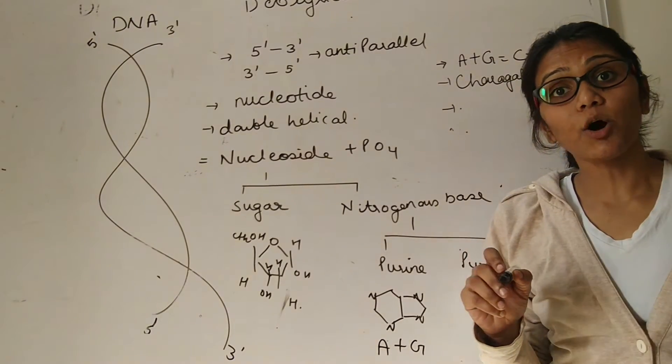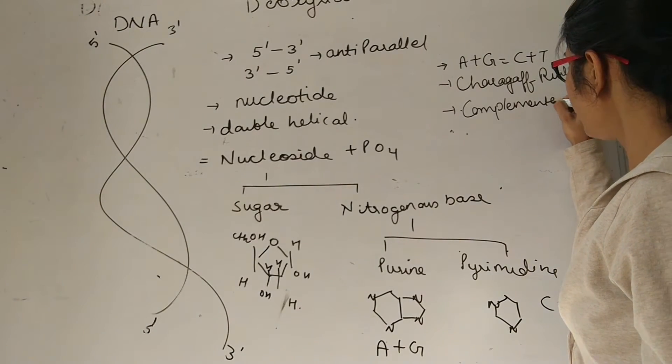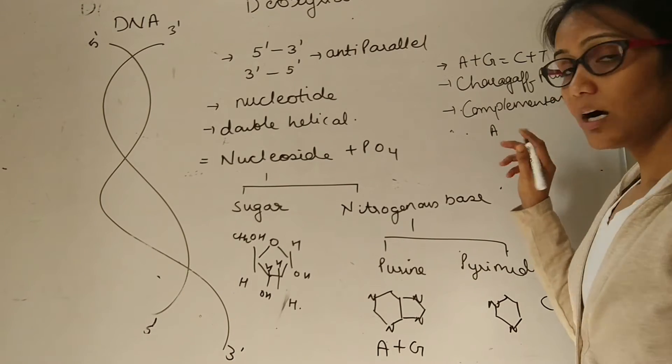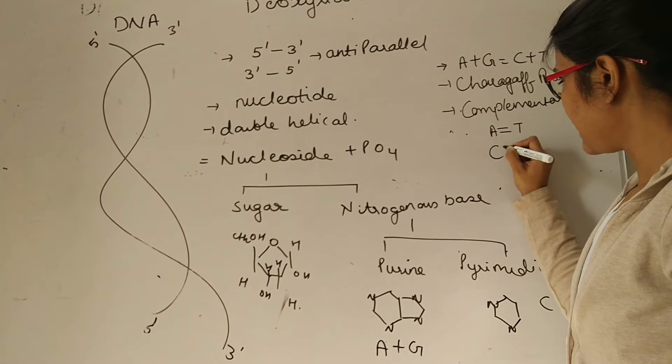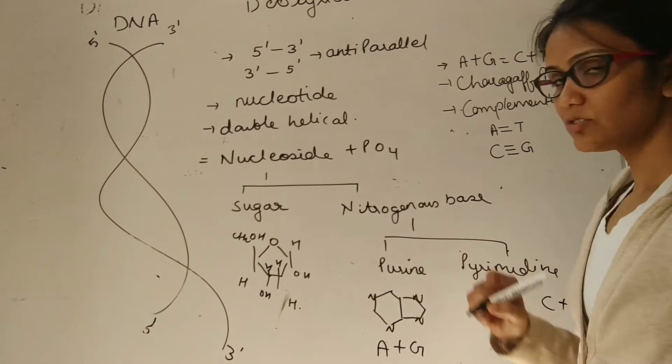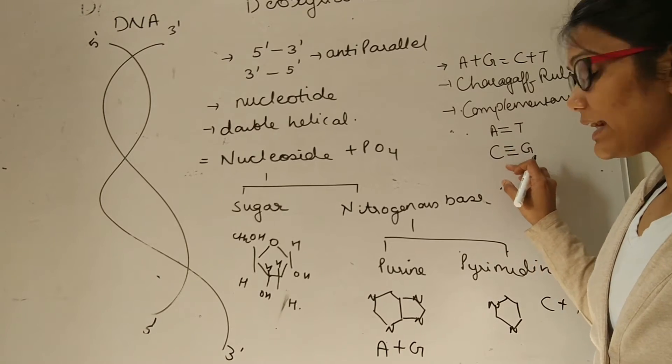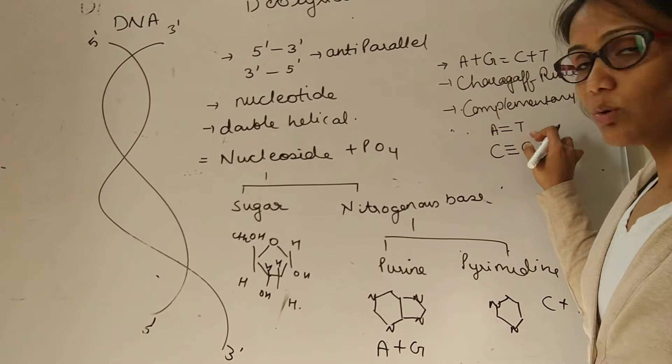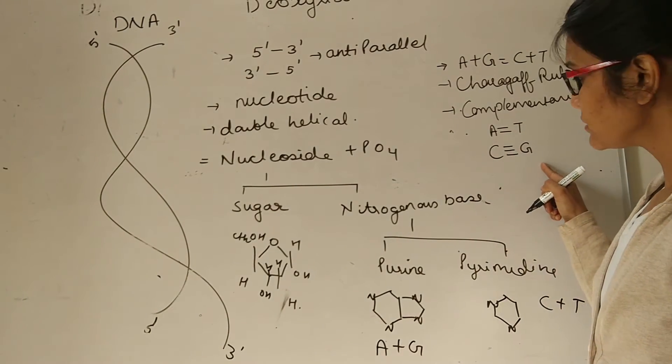The bases are complementary to each other. What do you mean by complementary? If one strand will have A, opposite to A there will be hydrogen bonding with T, and C will always hydrogen bond with G. It will be slightly stronger because it contains 3 hydrogen bonds in comparison to A and T which contain 2 hydrogen bonds. A double bond T and C triple bond G.